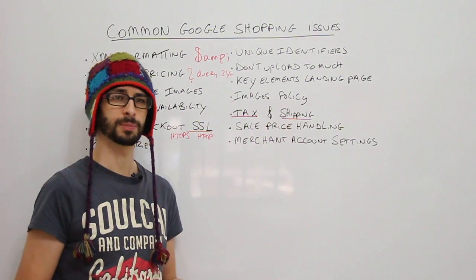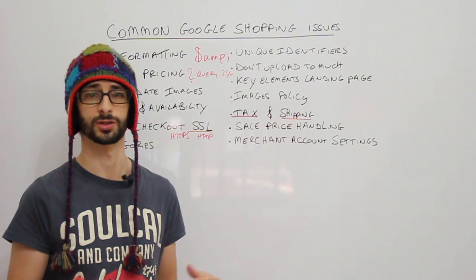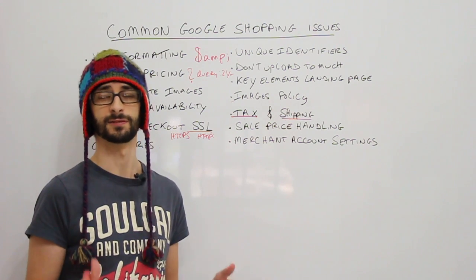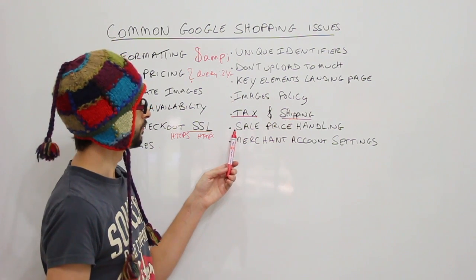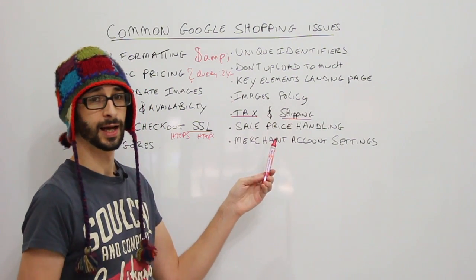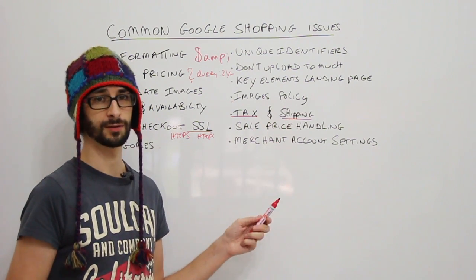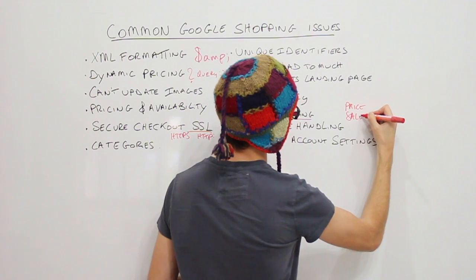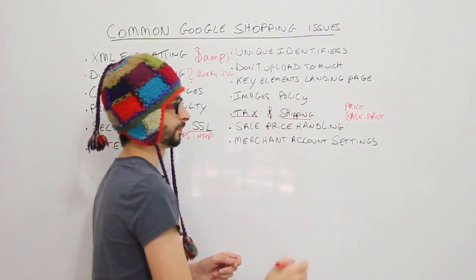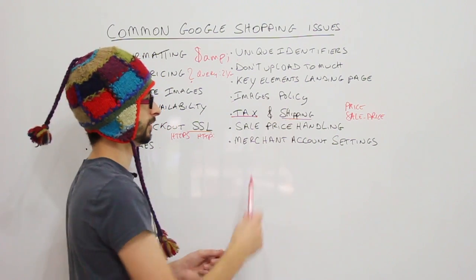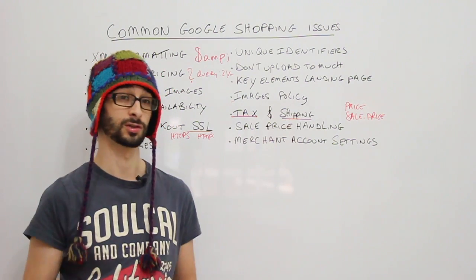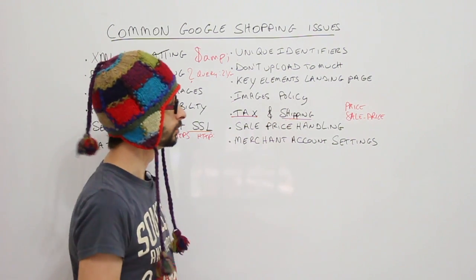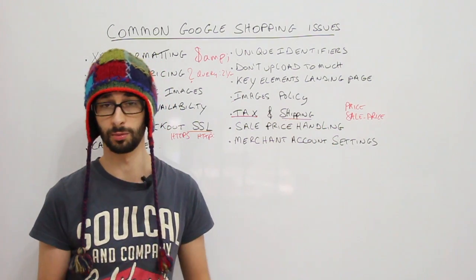Sale price handling is something a lot of people get wrong. If you have a promotion — for example, a product that normally costs £100 is being sold for £95 this month — you need to enter it as a sale price and add the start and end dates in your data feed. Do not change the normal price field. Price and sale price are two completely different fields. Also, if you are adding a product as a freebie in a promotion, do not list it as a sale price, because it is a promotion, not a sale.